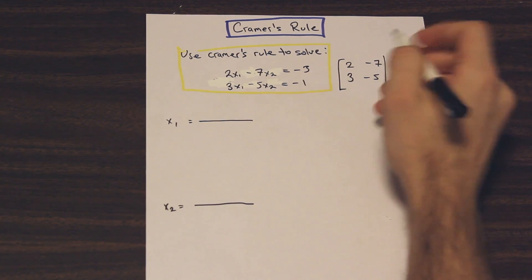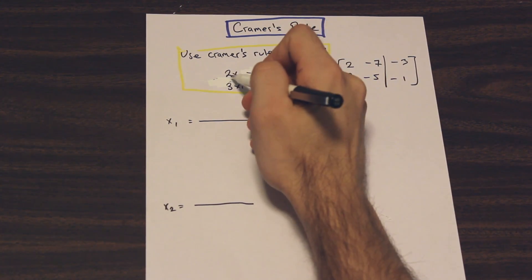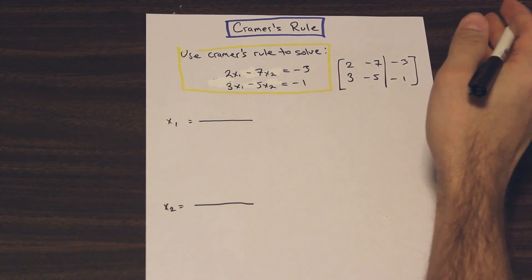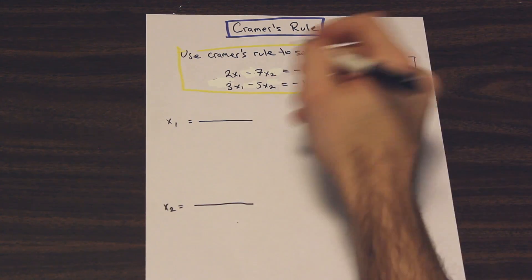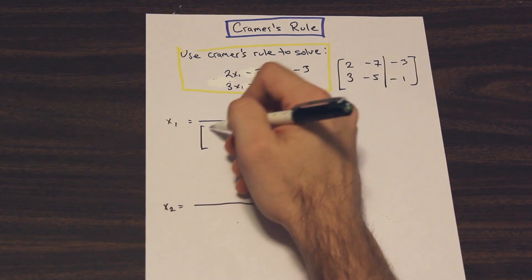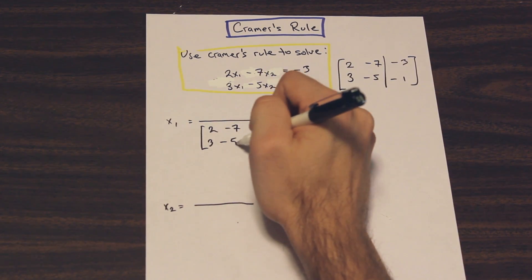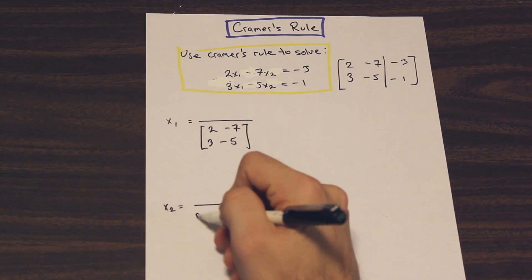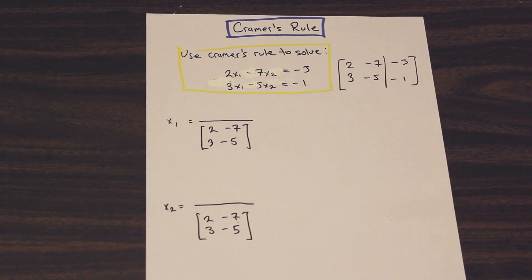So let's go ahead and solve this. The coefficients in front of x1 and x2, those are going to be on the bottom in both scenarios. So we'll write that immediately. We have 2, negative 7, 3, negative 5, and we're going to write exactly the same thing for x2.